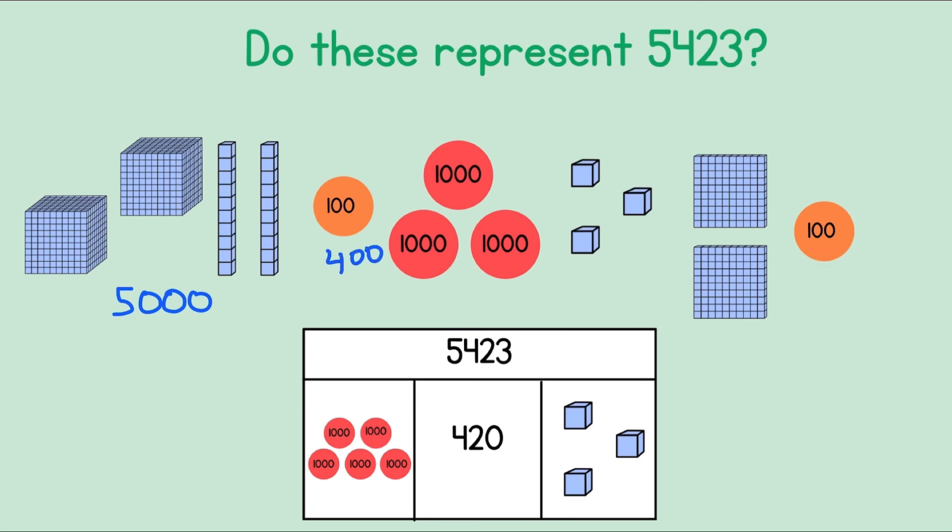Let's count our tens. 10, 20. And let's count our ones. 1, 2, 3. When you add them all together you get 5,423. So this one is correct.